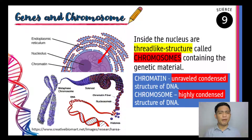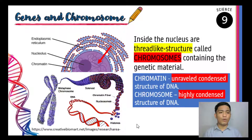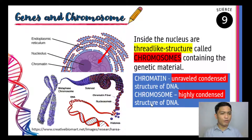Some of our cells die, and we grow in height, so cells need to multiply and divide. In preparation for cell division, the chromatin compresses and forms the chromosome structure. Chromatin is the unraveled, condensed structure of DNA. Chromosome is the highly condensed structure of DNA.